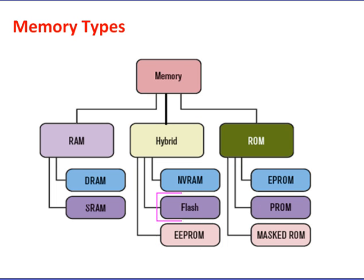Flash memory devices are high-density, low-cost, non-volatile, fast to read but not to write, and electrically reprogrammable. Flash devices can only be erased one sector at a time, with typical sector sizes in the range of 256 bytes to 16 KB.